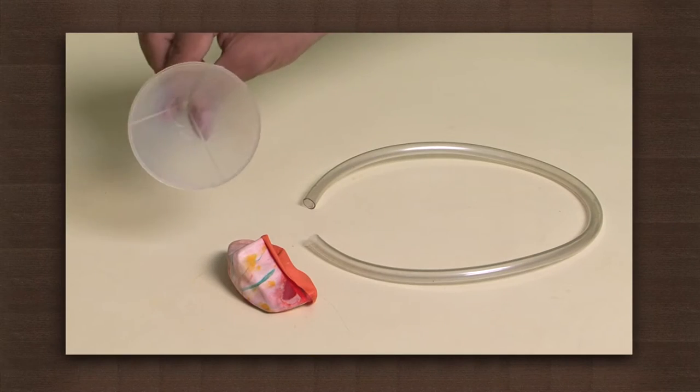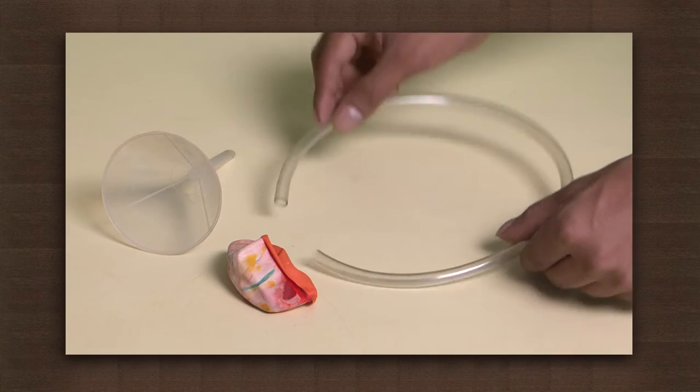When you go to a doctor, what does he use to listen to something in your chest? The doctor listens to the heart sounds and lung sounds using the instrument known as a stethoscope. We will learn to make a model stethoscope today. We need a funnel, a rubber tube and a rubber balloon.